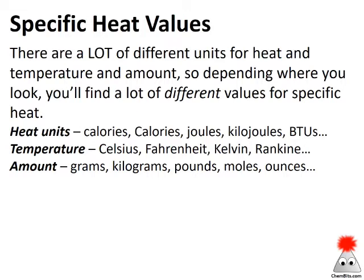Looking at specific heat values, there are a ton of different units because specific heat is a relationship between heat, temperature, and amount. Heat can be in small-c calories, big-C Calories, joules, kilojoules, or BTUs. Temperature can be in Celsius, Fahrenheit, Kelvin, or Rankine. Amount can be grams, kilograms, pounds, ounces, or even moles. So specific heat values are some combination of these heat, temperature, and amount units.